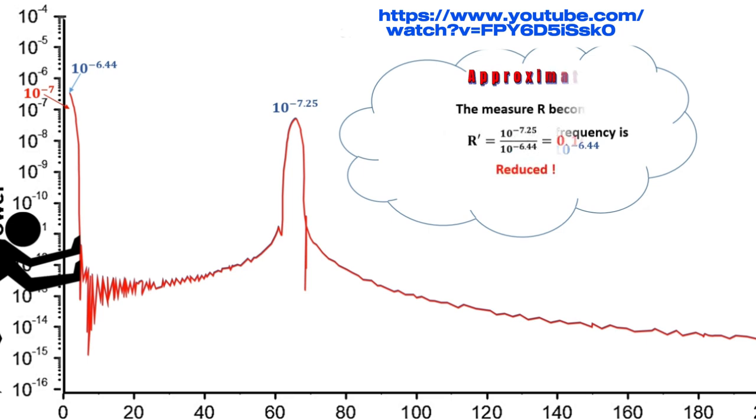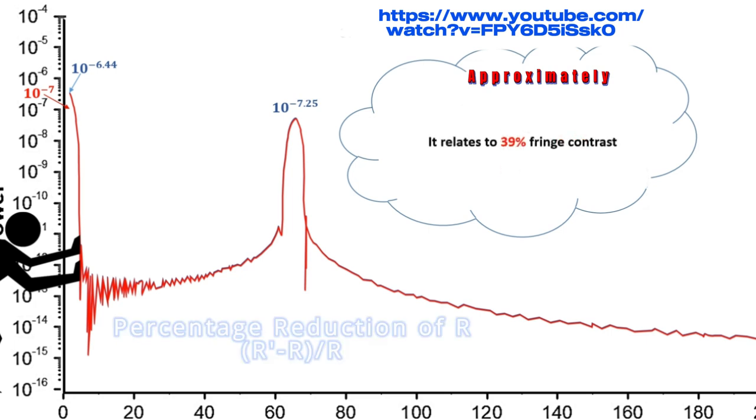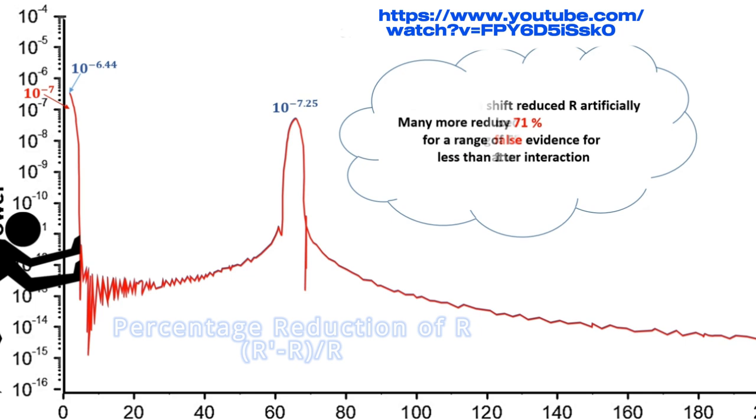The measure r becomes 0.16. It decreased. It relates to 39% fringe contrast. The spectrum shift reduced r artificially by 71%, providing false evidence for mind-matter interaction.